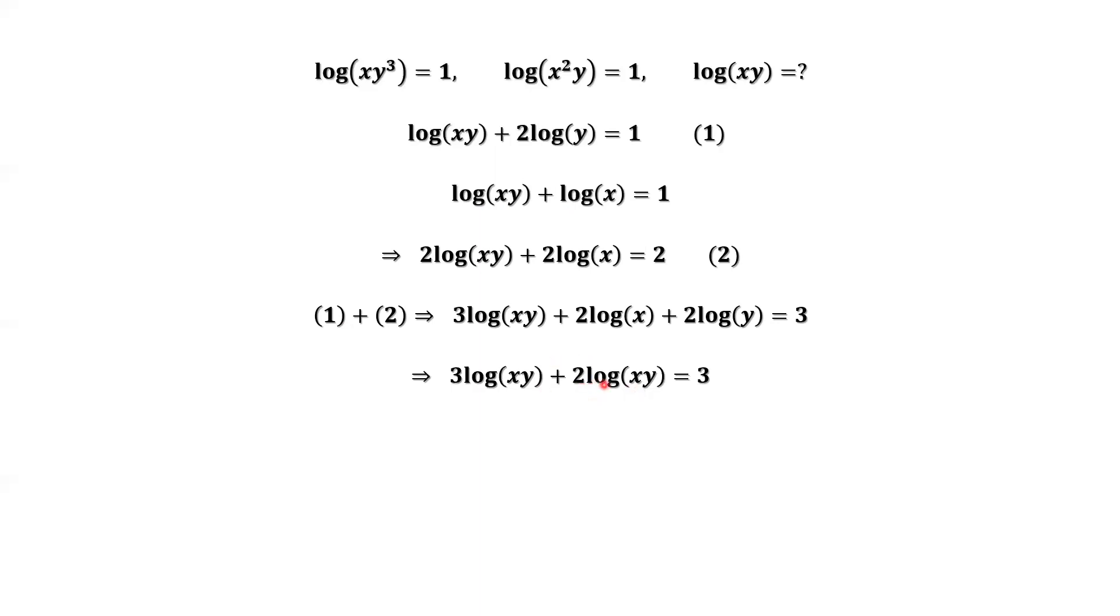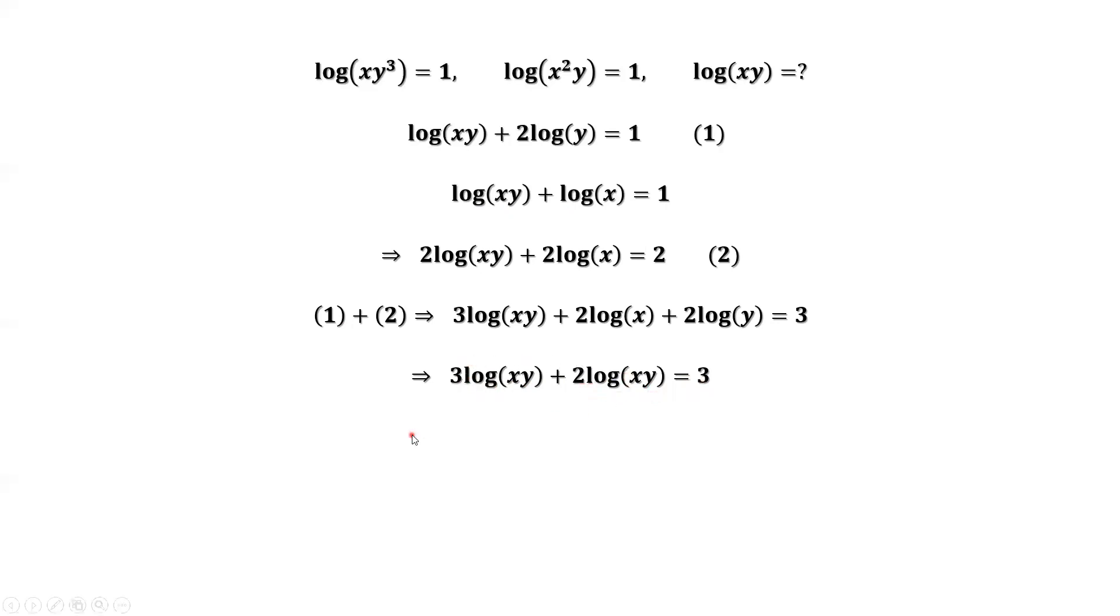2 log of x times y plus 3 log of xy equals 3. Simplify the left-hand side. We have 5 log of x times y equals 3.